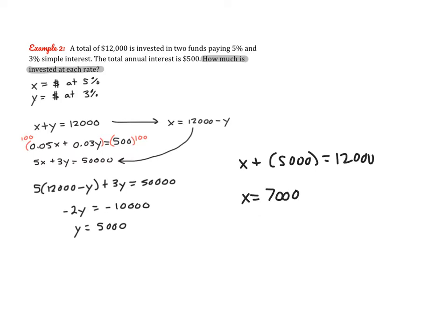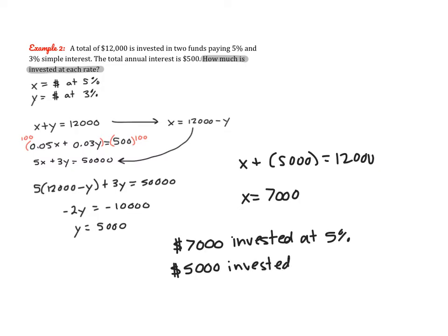We want to write our answer in a complete way. Since x represents dollars invested at 5% and y represents dollars invested at 3%, the answer is $7,000 invested at 5% and $5,000 invested at 3%. This is why we like to define our variables — so we can see exactly what the answer represents.